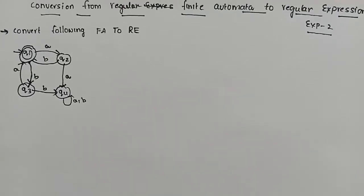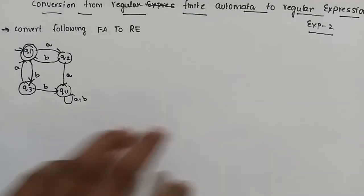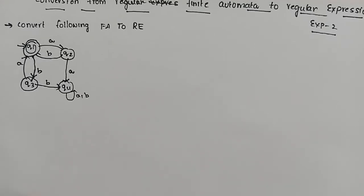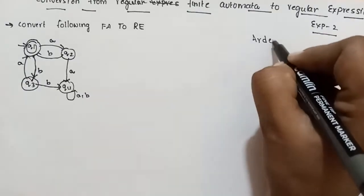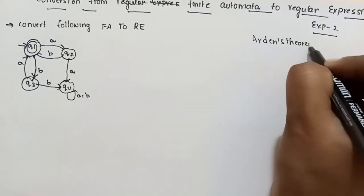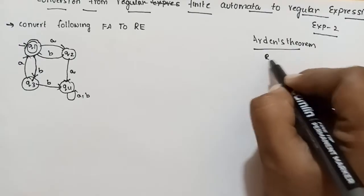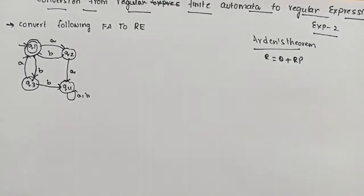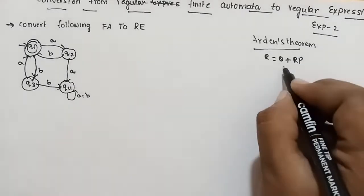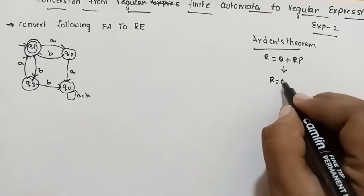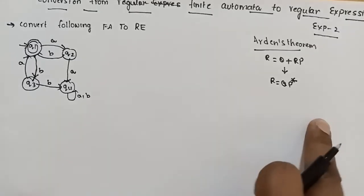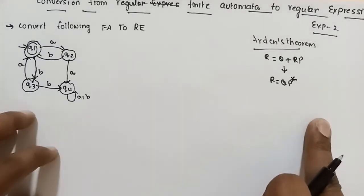I have a second example. I have a regular expression in this video. We use Arden's theorem. Suppose we use the regular expression formula: r equals q plus r·p. We apply the formula for r equal to q·p star. Let's substitute this and solve this problem.